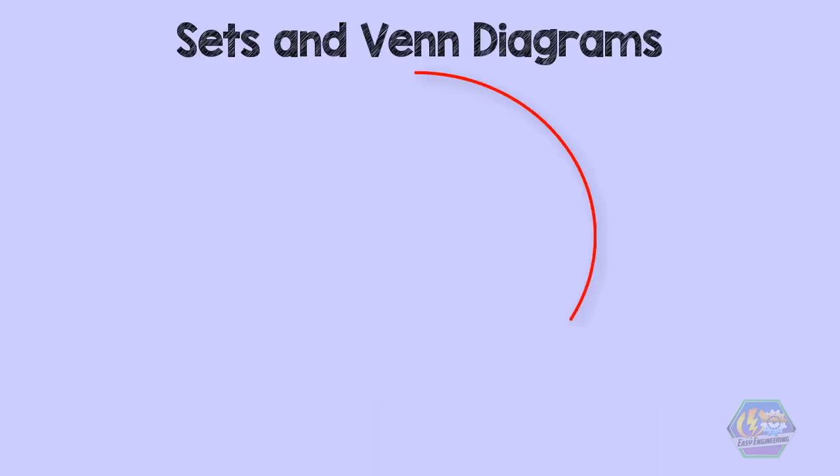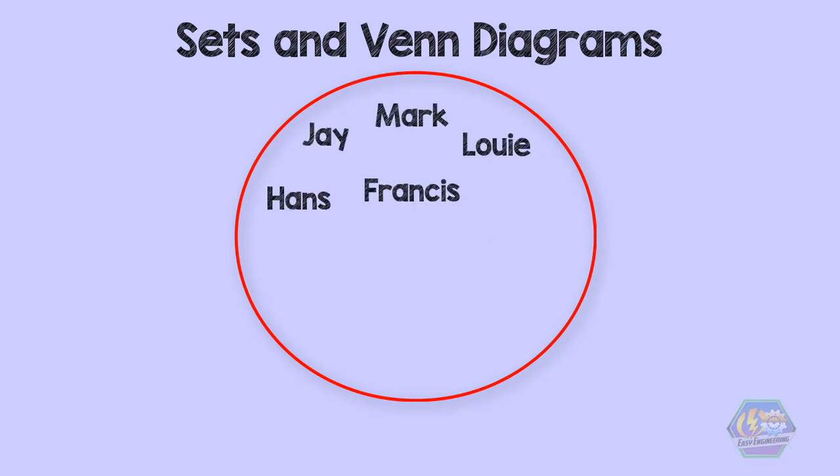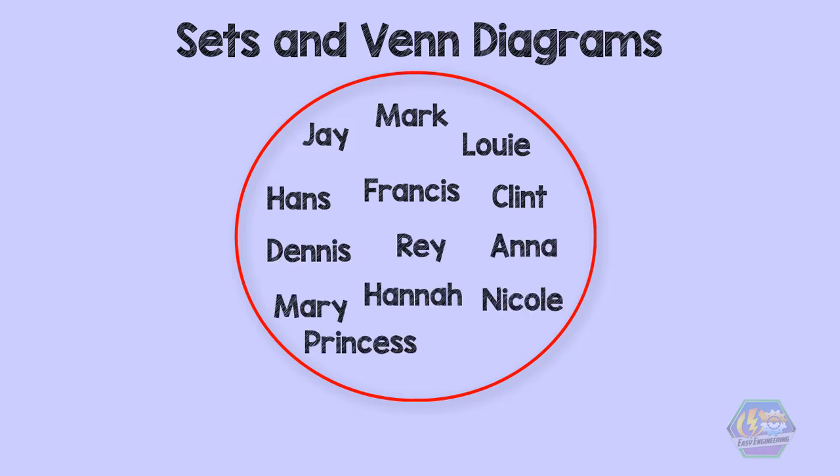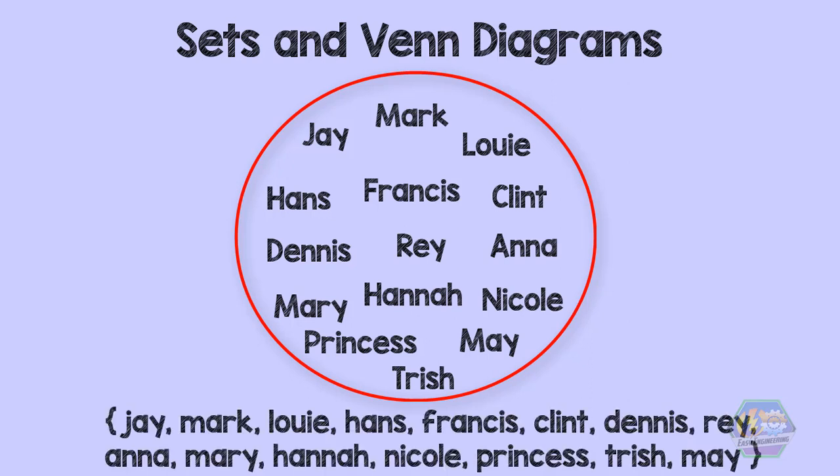Suppose that there are 15 students in a classroom, specifically Jay, Mark, Louis, Hans, Francis, Clint, Dennis, Ray, Anna, Mary, Hannah, Nicole, Princess, Trish, and May. Each of them is a member of the set. Note that it is normal to have lowercase letters for their names.